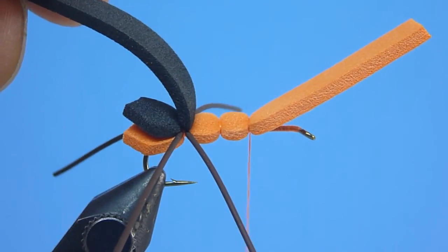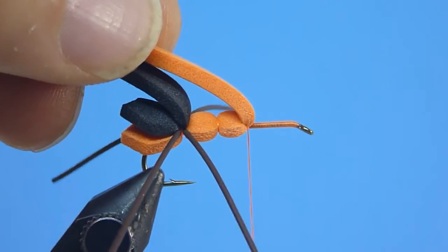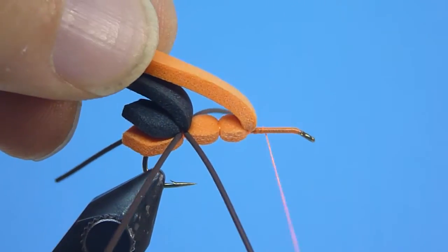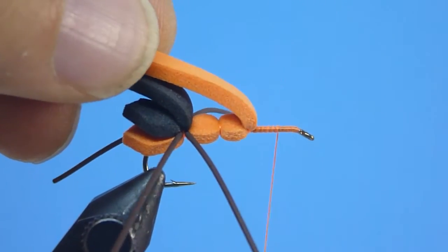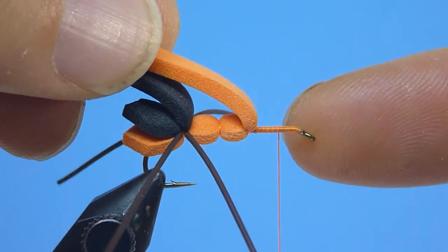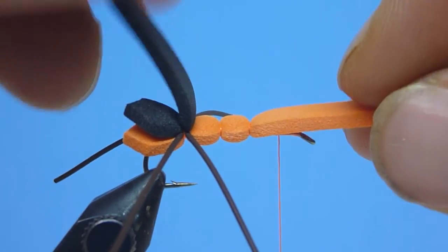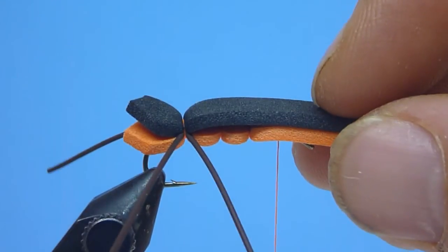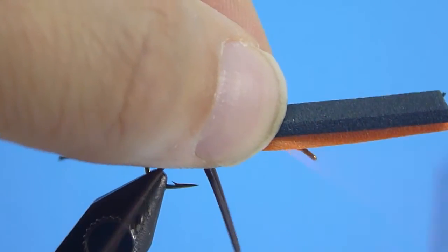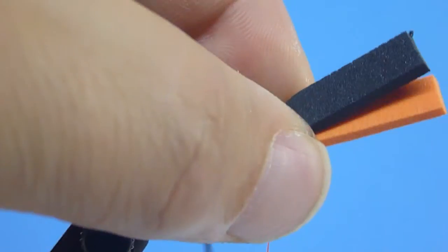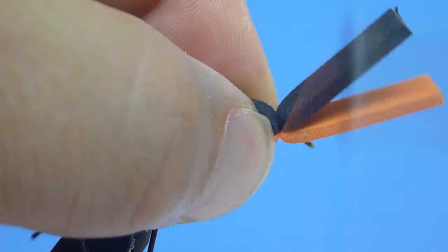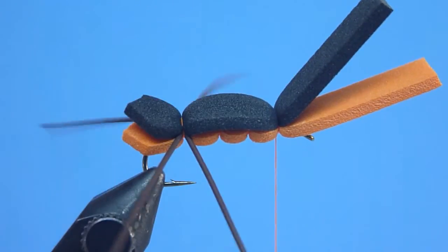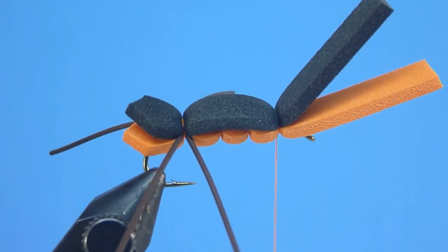For our third and final body segment, we'll again pull both strips to the rear, advancing our thread forward to a comfortable resting stop located just a short distance behind our hook eye, where we'll now press firmly forward together both the black and orange body strips, binding them both firmly in position along the hook shank's top with a few more carefully wound, well-placed, snug-drawn thread wraps.